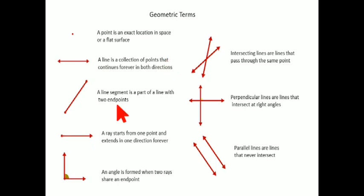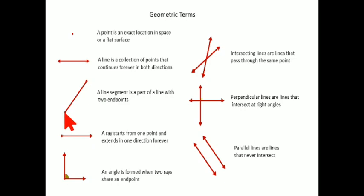Another part of a line which has an endpoint is called a line segment, which is a part of a line. A line segment is a part of a line with two endpoints — this is one endpoint and this is the other endpoint. So a line segment has two endpoints and is a part of a line.